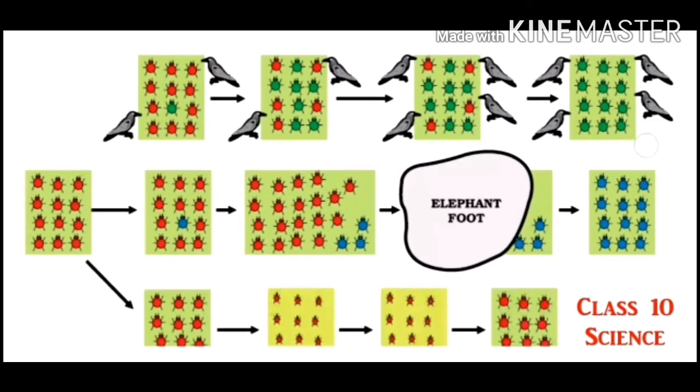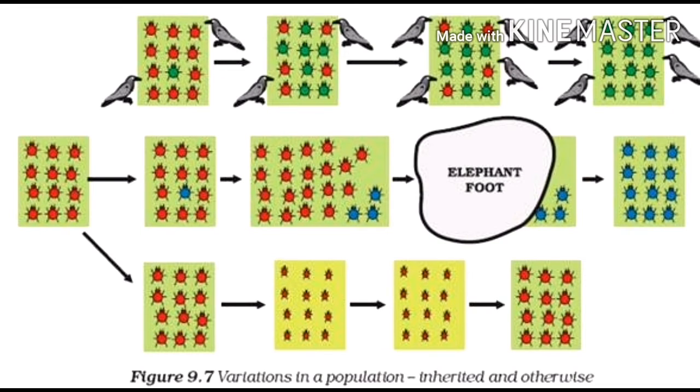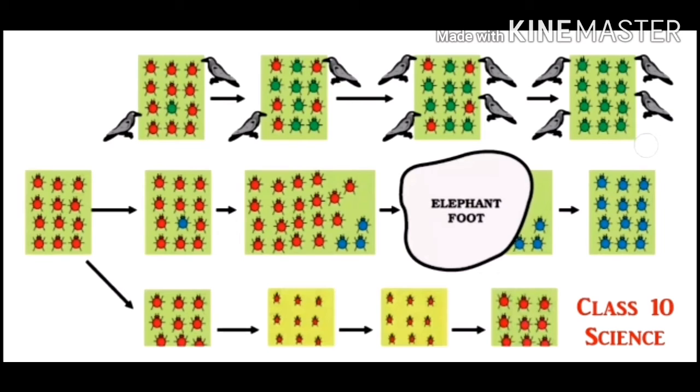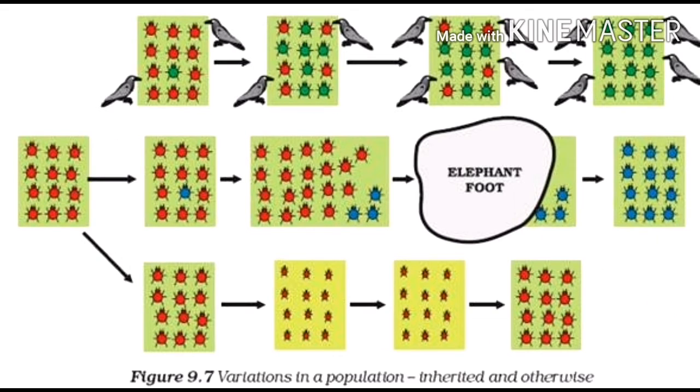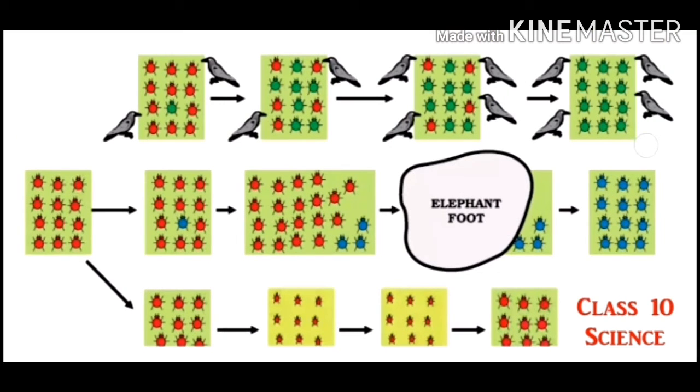This advantage is that it is difficult for crows to spot green colored beetles on green leaves while red colored beetles on green leaves are spotted even from a distance. As a result, red colored beetles are eaten away by crows more often and green beetles escape.